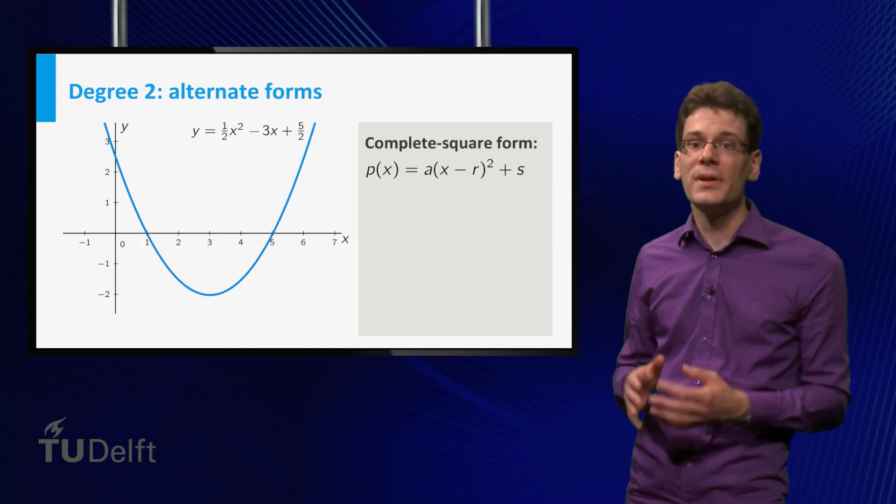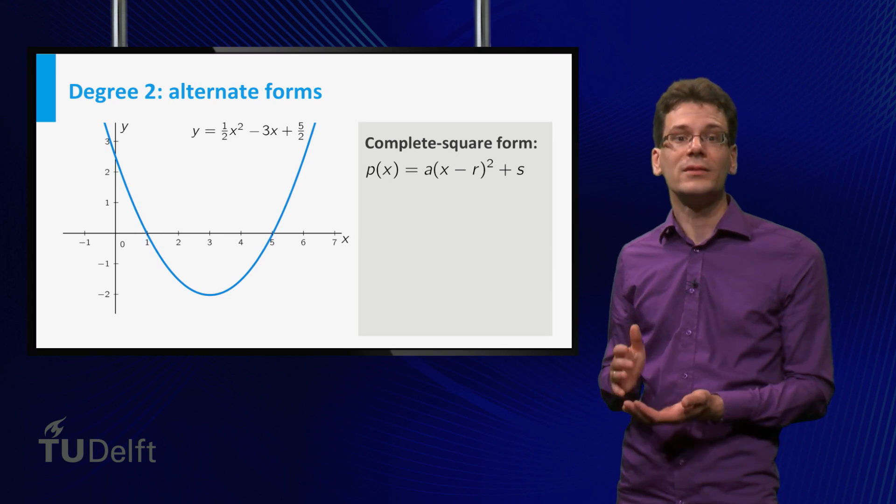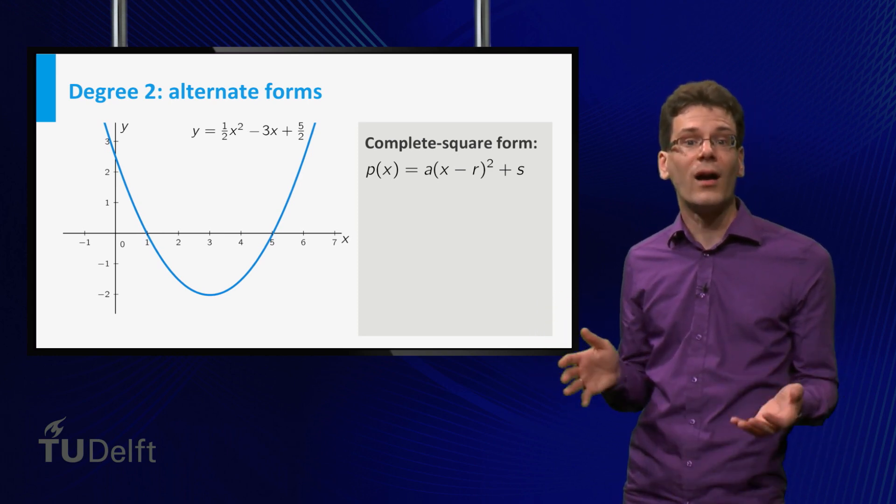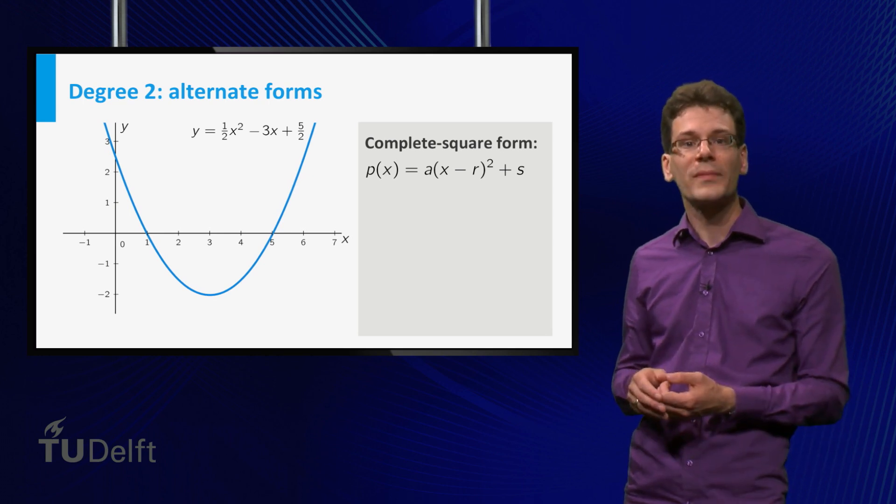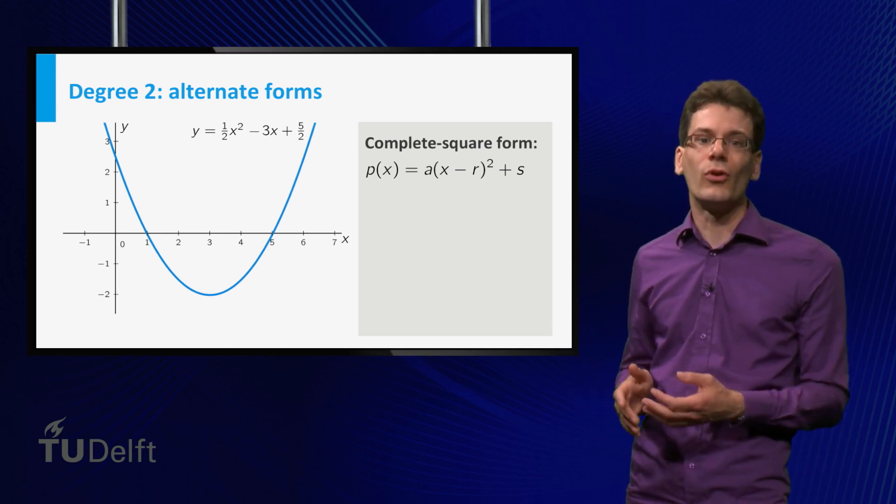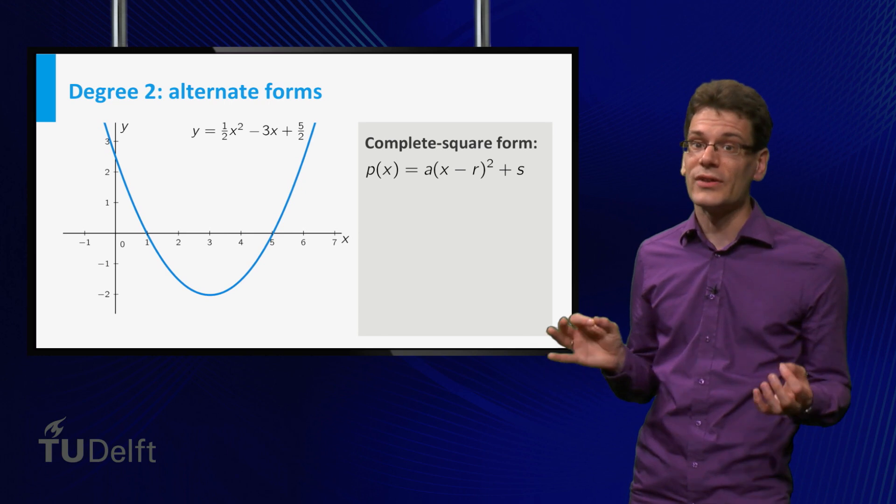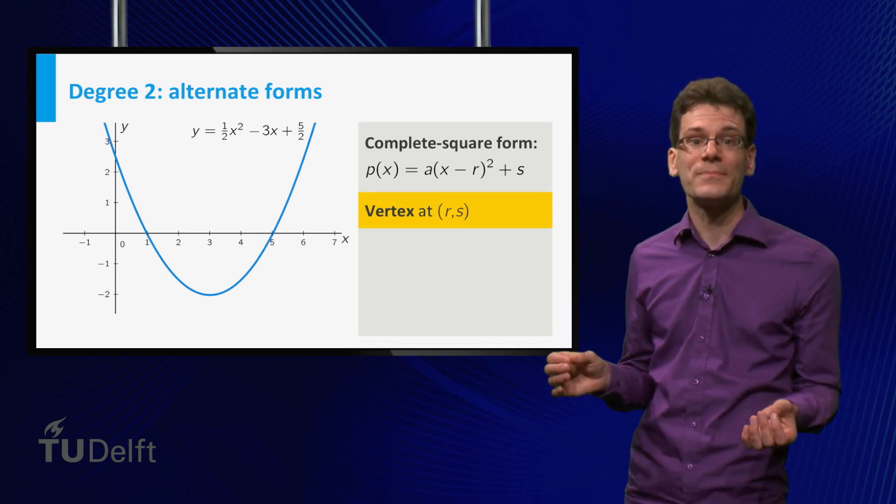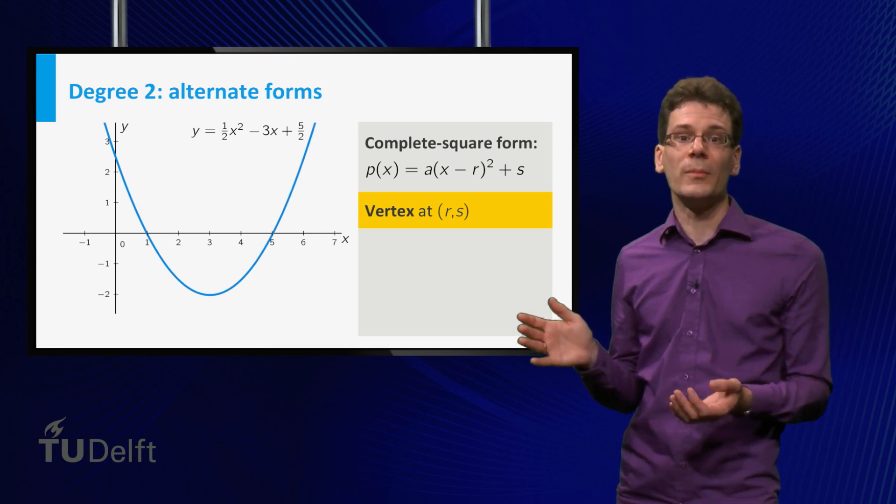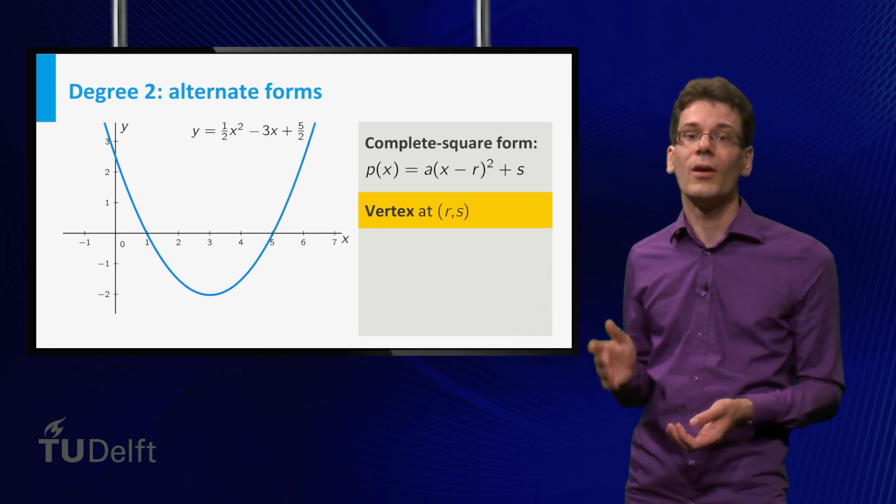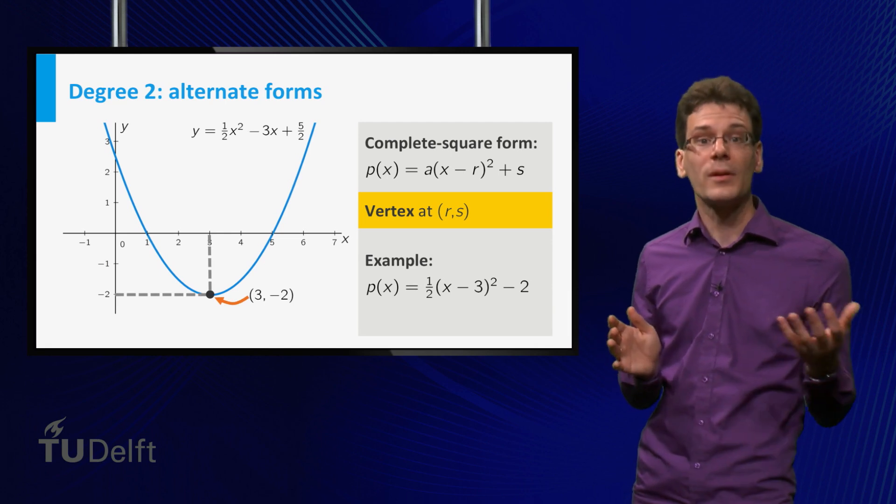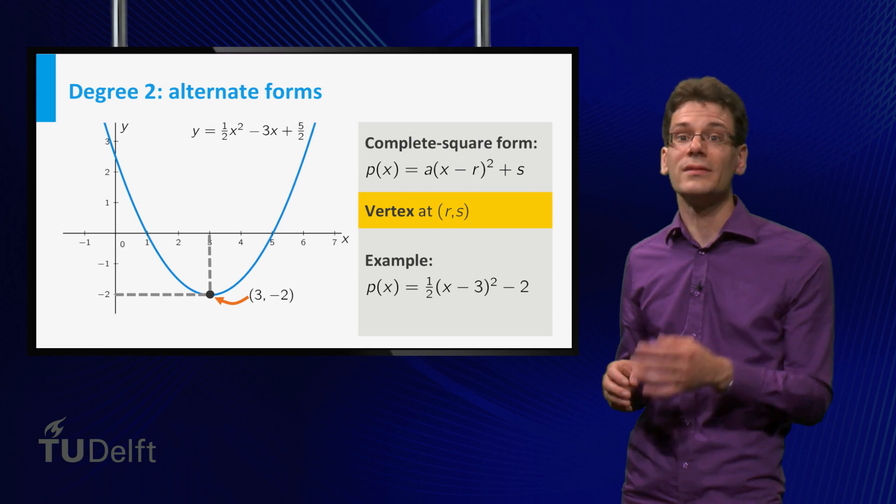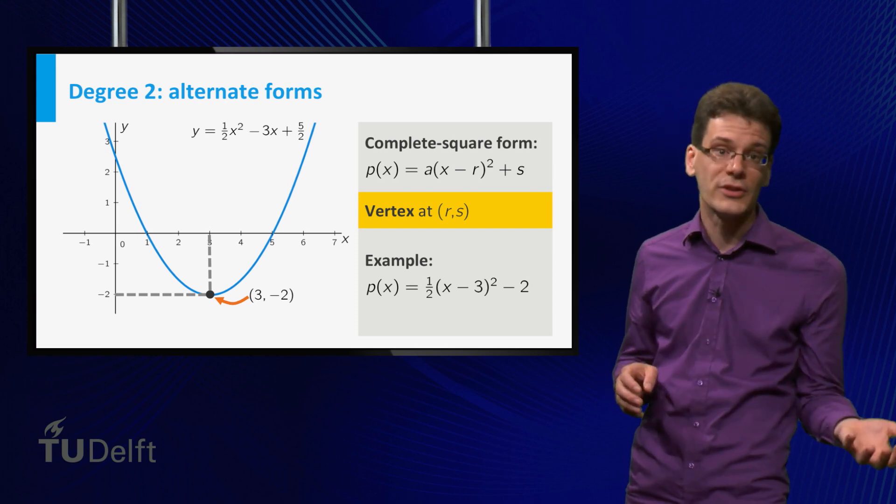Another common form is the complete square form, a times (x minus r) squared plus s, where a, r and s are constants. Here a plays the same role as before, but also r and s have a clear interpretation. They are the x and y-coordinates of the vertex. Our example polynomial can also be written in this form, 1 half times (x minus 3) squared minus 2. And indeed, you see that the vertex is located at 3 comma minus 2.